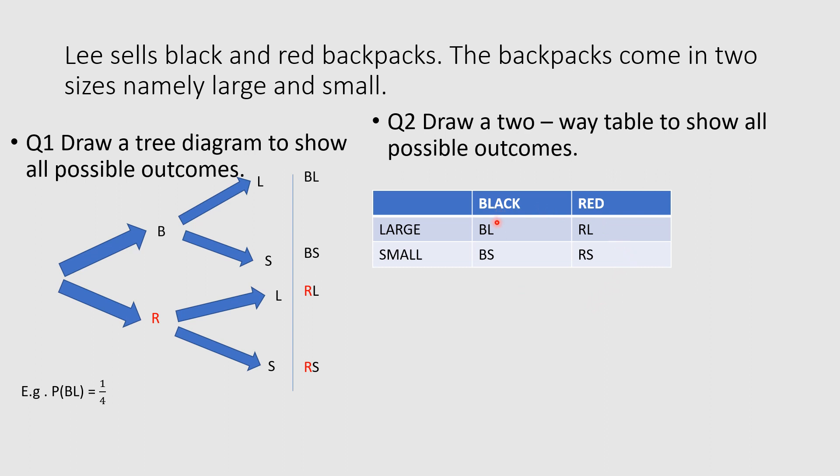Notice that the outcomes listed on the two-way table and the outcomes from the tree diagram are exactly the same. So I can use either a tree diagram or a two-way table to show all possible outcomes. Likewise, from this two-way table, I could ask: what is the probability of choosing a black backpack that is large? Number of ways an event can occur - BL appears once over number of possible outcomes: 1, 2, 3, 4. So my answer again would be one over four.